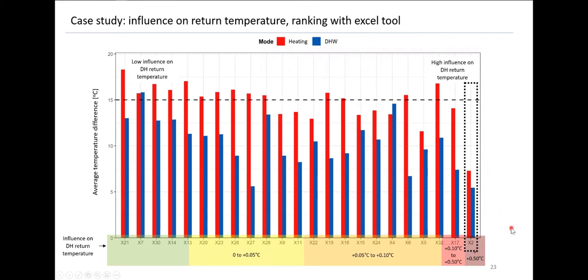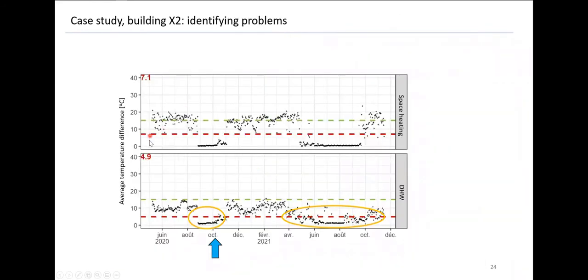Looking at substation x2 in detail, the daily average temperature difference shows the problem is not permanent — some days everything works fine, but suddenly there are days with a very small temperature difference in heating mode. Similarly for domestic hot water mode — the problems occur at certain moments. It's interesting to look at what happens during those problem periods, for example in October, when there is still some space heating demand alongside domestic hot water demand.